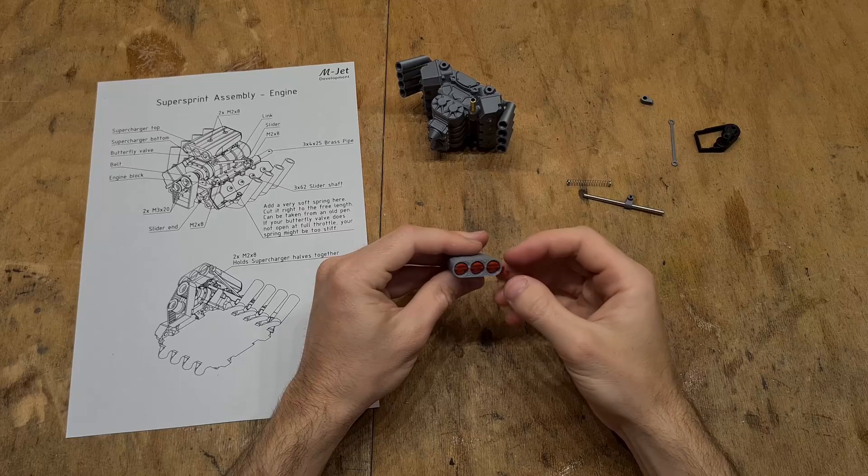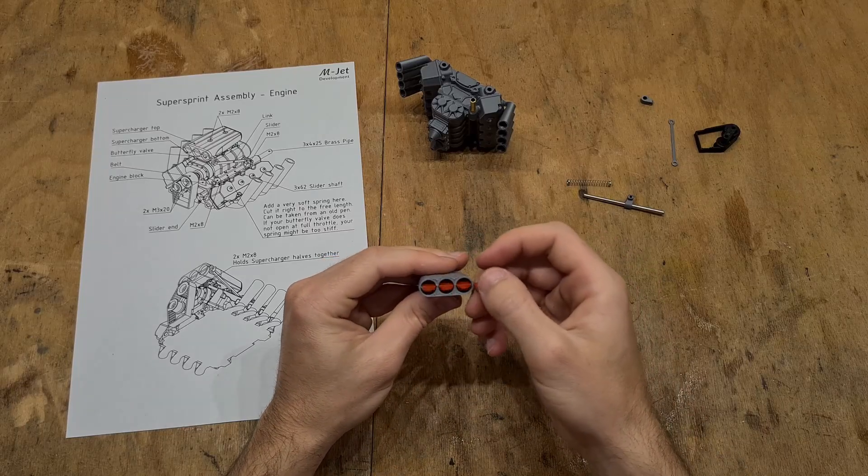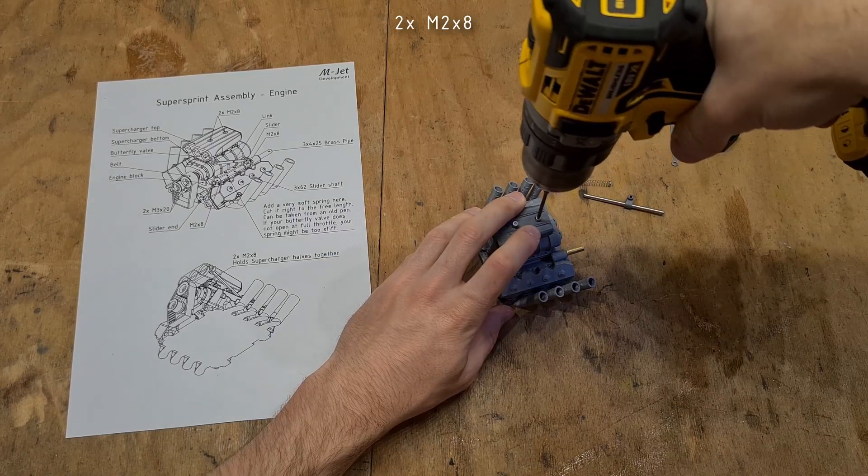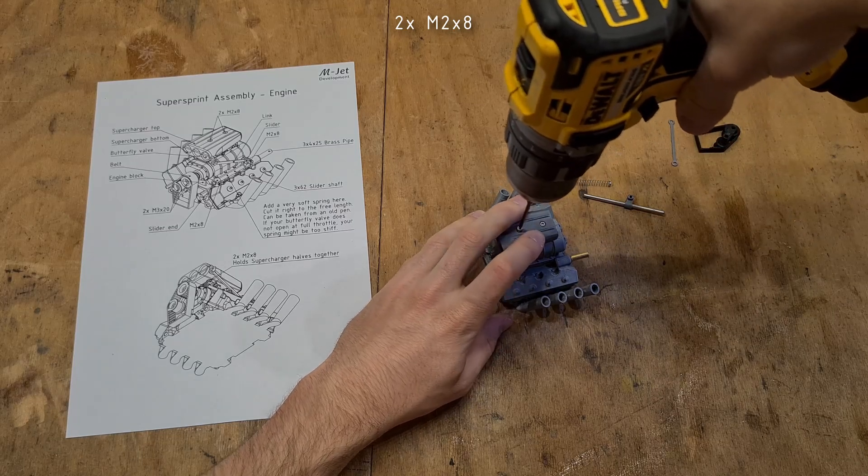Make sure that the butterfly valve can move completely freely without any force. Then you can use two M2x8 to mount the supercharger intake onto the engine.